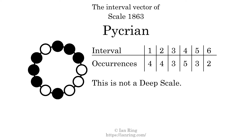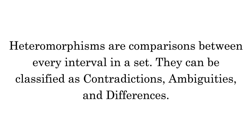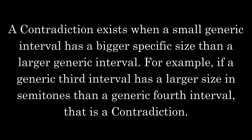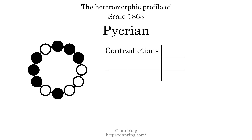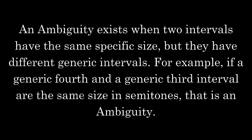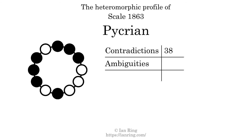Heteromorphisms are comparisons between every interval in a set. They can be classified as contradictions, ambiguities, and differences. A contradiction exists when a small generic interval has a bigger specific size than a larger generic interval — for example, if a generic third interval has a larger size in semitones than a generic fourth interval. The number of contradictions in this scale is 38. An ambiguity exists when two intervals have the same specific size but different generic intervals — for example, if a generic fourth and a generic third interval are the same size in semitones. The number of ambiguities in this scale is 26.